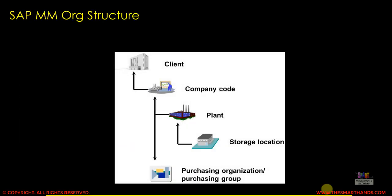Before I show you the SD org structure, I want you to look at the MM and other module structures so that you have some basic understanding. In the MM org structure, on the top we have a client, under client we have company code, under company code we have plant, and under plant we have store location. Many of the org elements are common in different modules — for example, plant and company code are common in MM, PP, SD, and FI modules.